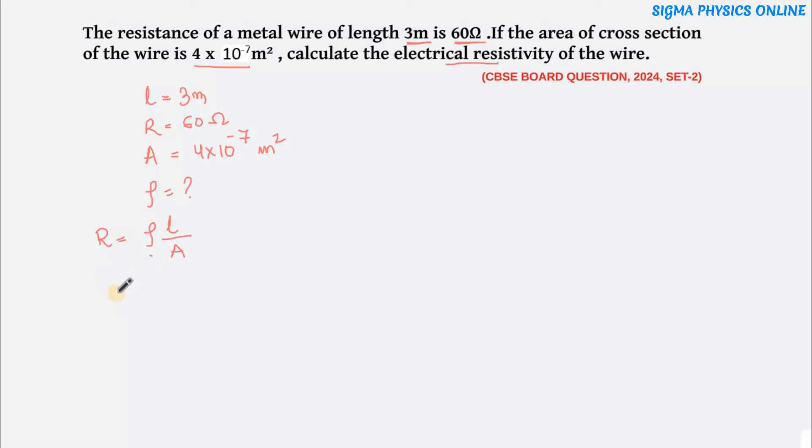So, we need to find out the resistivity, that is rho. We will rewrite this formula. Rho will be R into A by L.